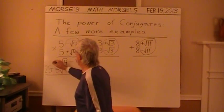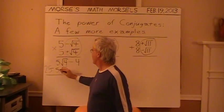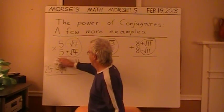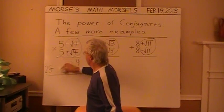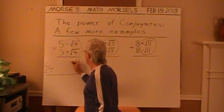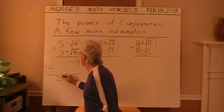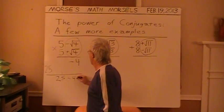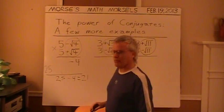Add these up. The 5 times the square root of 4 and the negative 5 times the square root of 4 cancel. Their sum is 0. Get rid of them. And that minus stays, leaving 25 minus 4 equals 21.